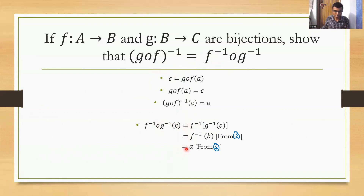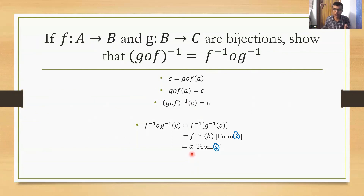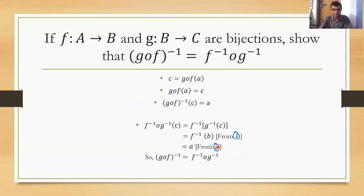So we have shown that these two functions have the same domain and for every element of that domain they map to the same element — which means these two are the same function. Therefore (g∘f)⁻¹ = f⁻¹∘g⁻¹. If you like this solution, please give a thumbs up, and if this is your first time on my channel, kindly subscribe. Thank you.